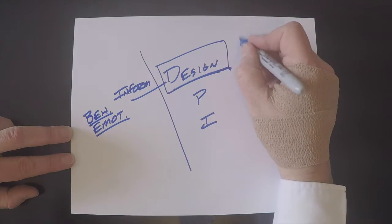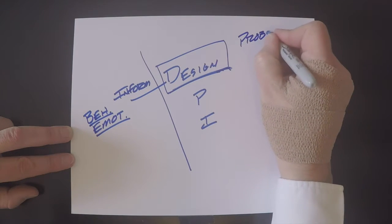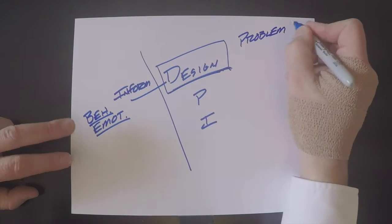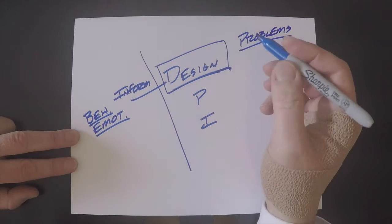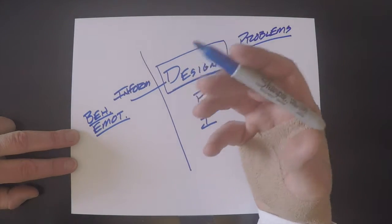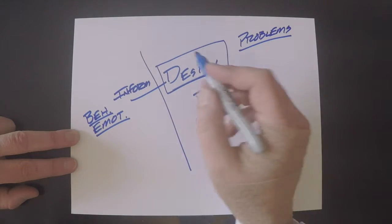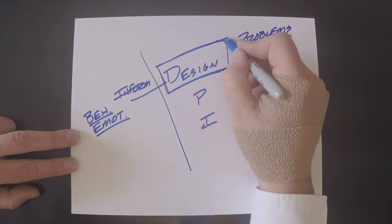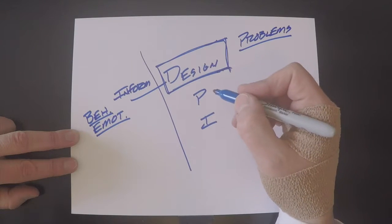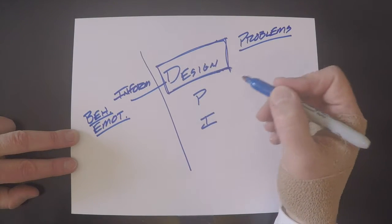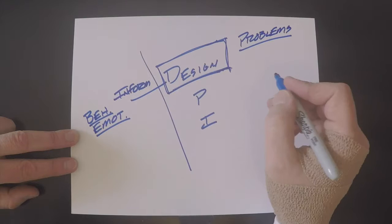And what we're looking for here is problems to solve. So we talked about the Sharpie, for example, and the problem that the ink would dry out. And how are we going to fix that? That's where we're at the design piece. Once we have the problem, now we can start talking about how we're going to fix the Sharpie and that problem.